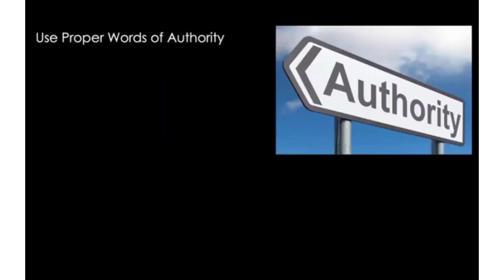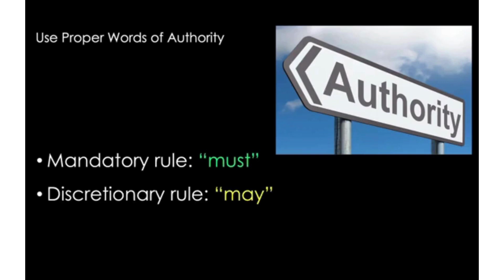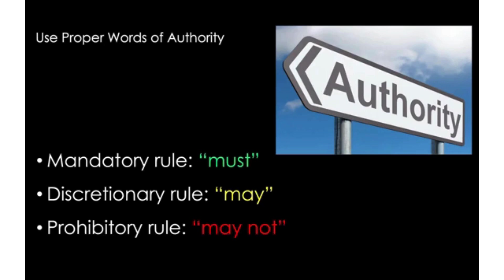Let's talk about using proper words of authority, which helps us extract accurate rules. Different rules set forth different duties, rights, prohibitions, and entitlements, so the accuracy of your rule statements truly depends on using the proper words of authority. Match the level of authority in your writing with what's used in your cases. Mandatory rules use the word 'must.' Discretionary rules use 'may.' Prohibitory rules use 'may not.' If a rule mandates certain action, make sure you're using 'must' rather than 'may.'